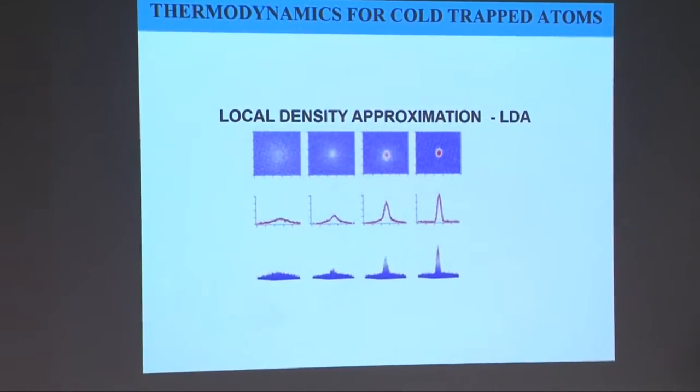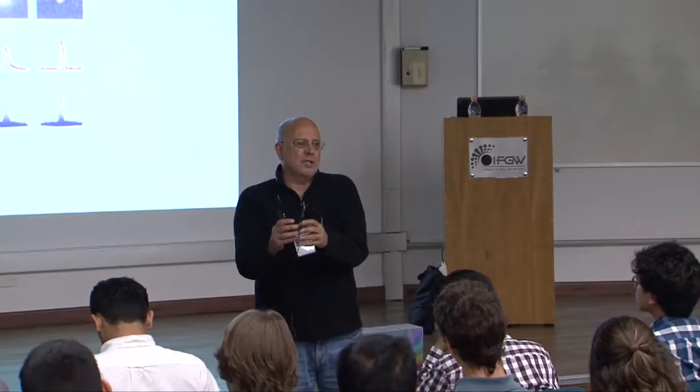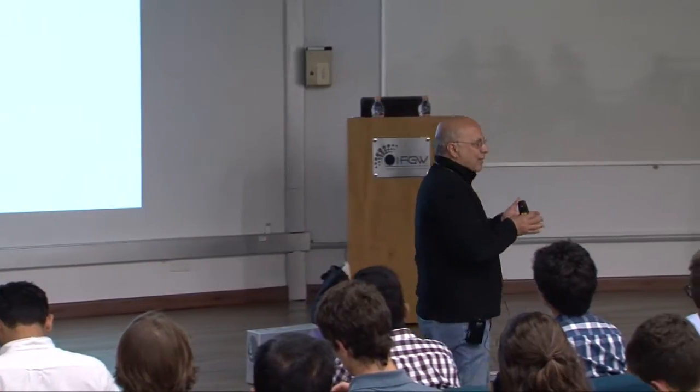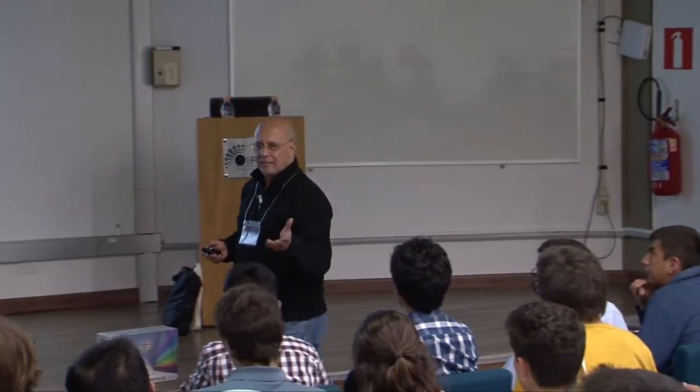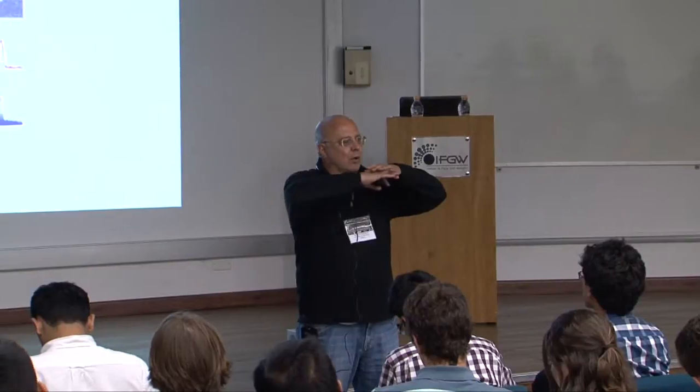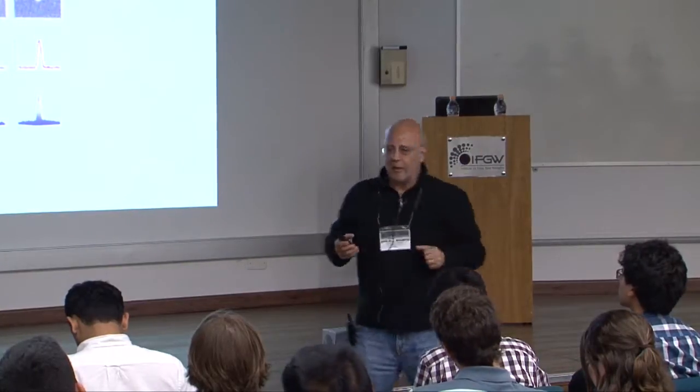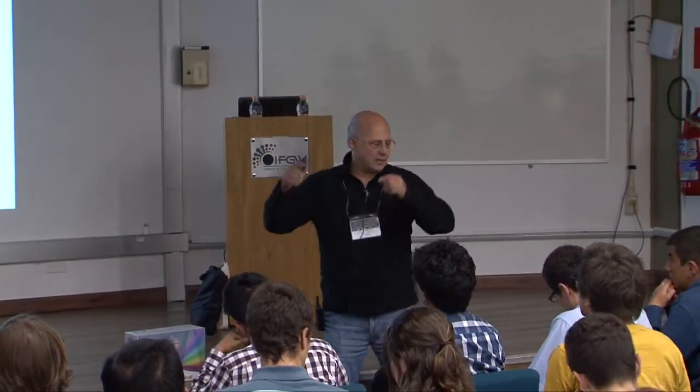Normally, if you have a system with variable density, this is what we call a non-homogeneous system. It's hard to do the thermodynamics because you have to think that each portion is independent. And in condensates, it's not true.